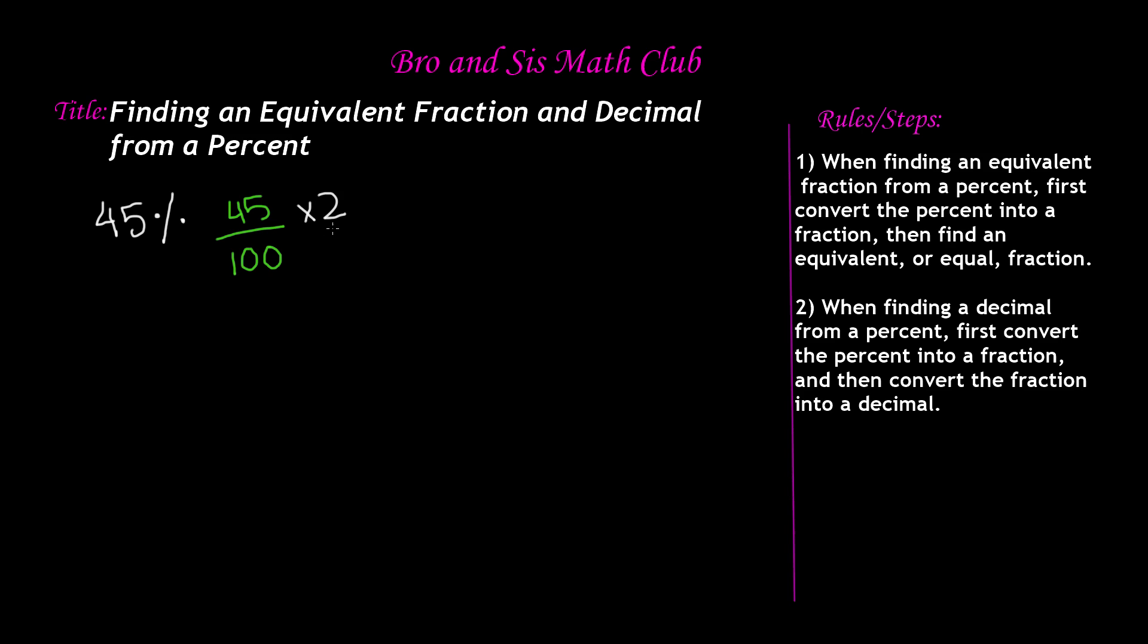So 45 times 2 and 100 times 2. So we know that 100 times 2 is 200 and 45 times 2 is 90 because if we do 45 multiplied by 2, we know that 5 times 2 is 10, 0 and then carry the 1.